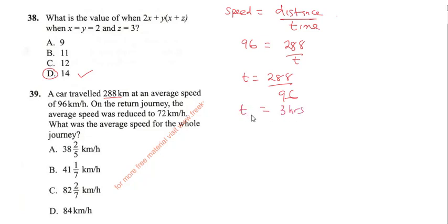Okay, so this is for the journey. Then now it said on the return journey the average speed was reduced to 72 kilometer per hour. Now we'll still apply the same formula, so that 72 will be, remember return journey will still cover the same 288. So this will be 288 divided by T. So therefore T will be 288 over 72, and when you do 288 divided by 72 you're going to get T as 4 hours.